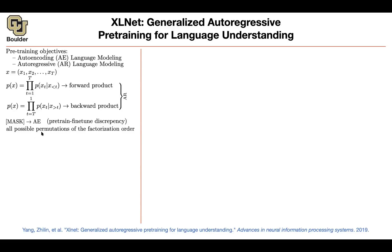What are the shortcomings of these two methods? For the AR model, there is nothing special about the forward or backward product — any possible permutation can work to factorize this probability. The problem with auto-encoding methods like BERT is that there is a discrepancy between pre-training and fine-tuning. During pre-training you have this mask token, and this token you're not going to see during fine-tuning, so there is a bias towards this mask in your data.